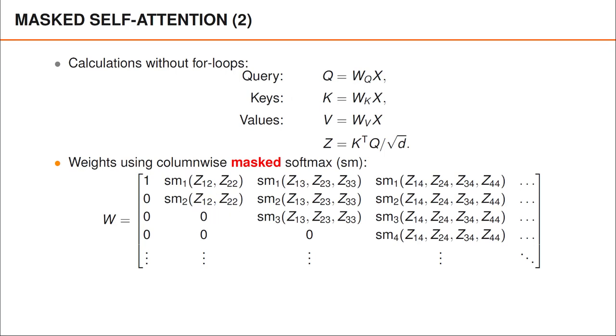In general, column i has i non-zero elements that we can compute by taking a softmax with respect to z1i to zii.